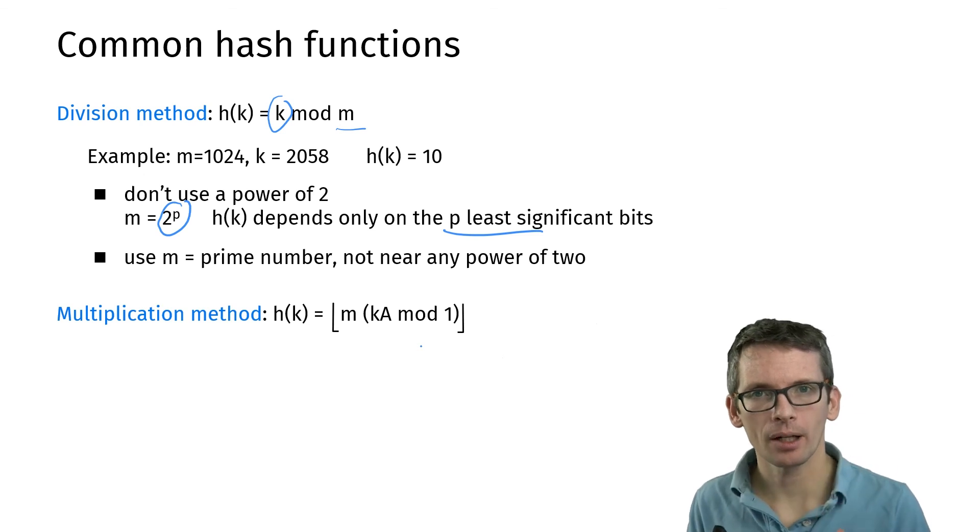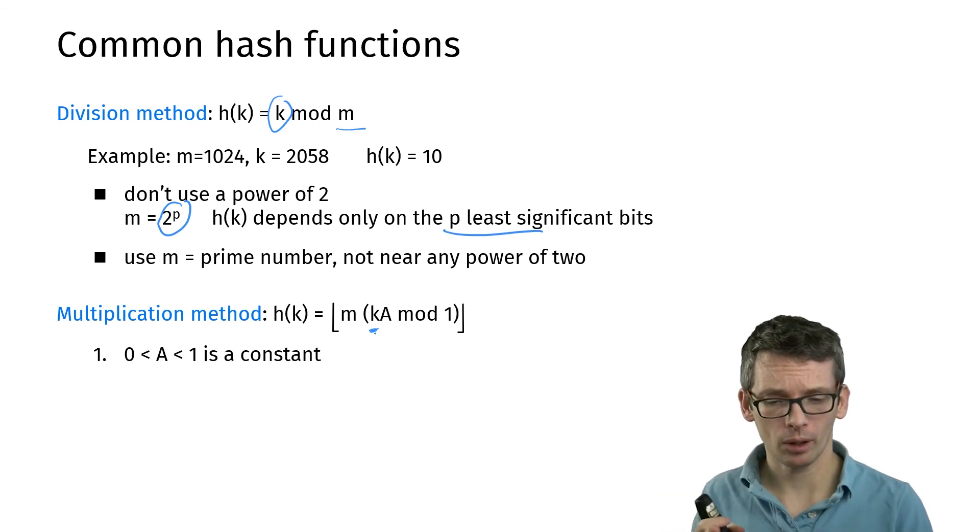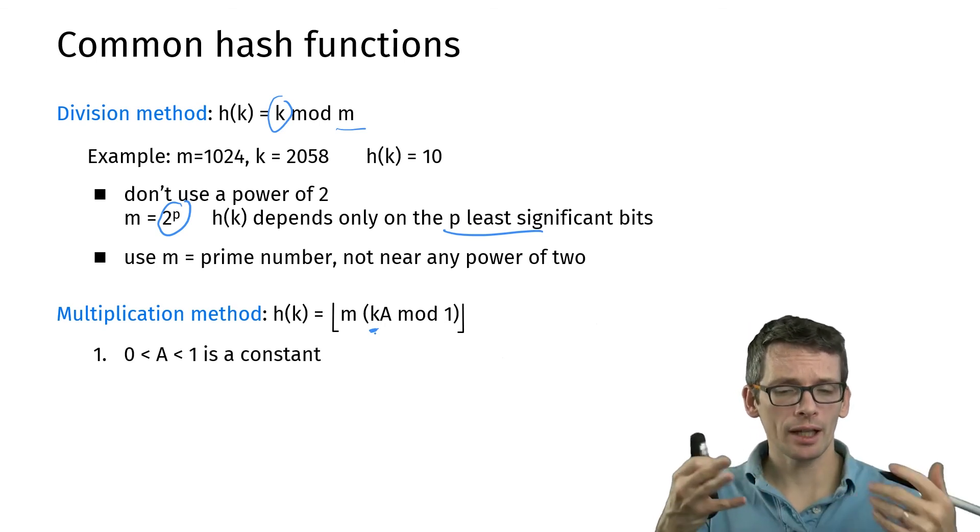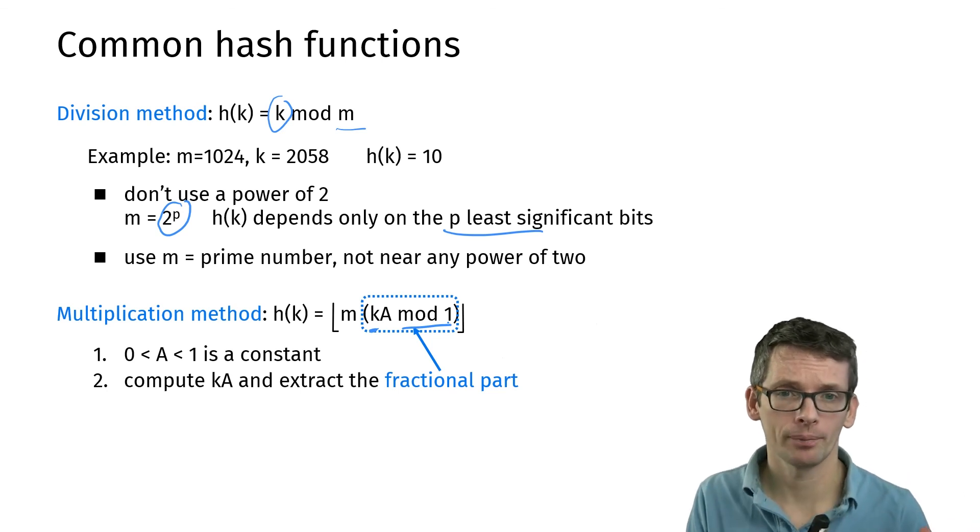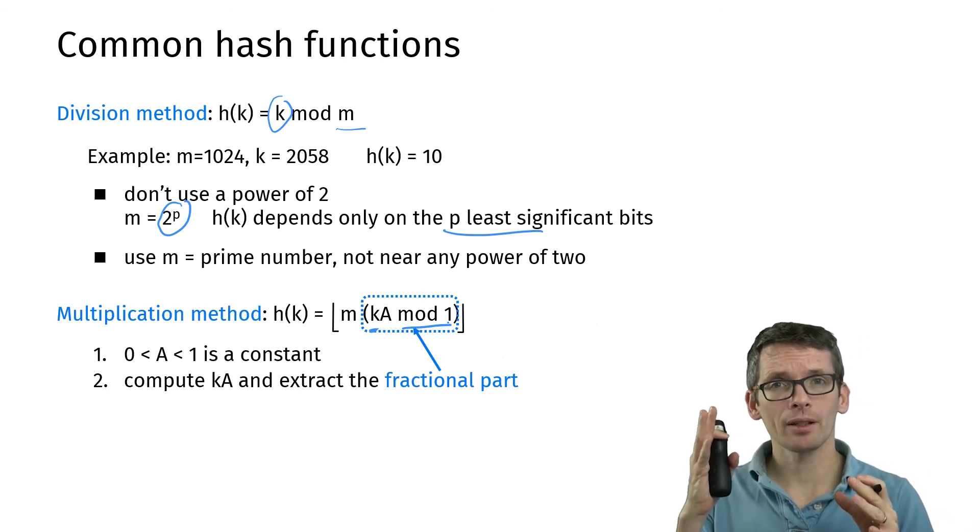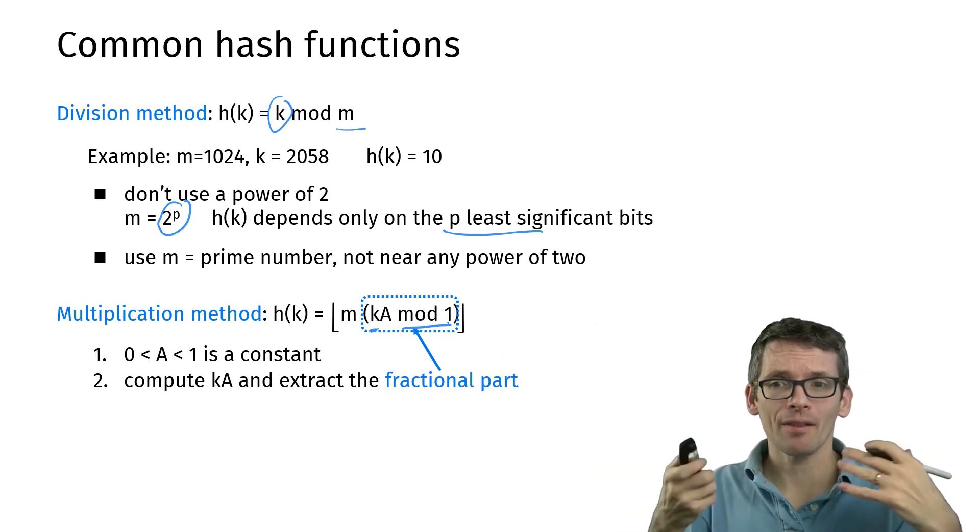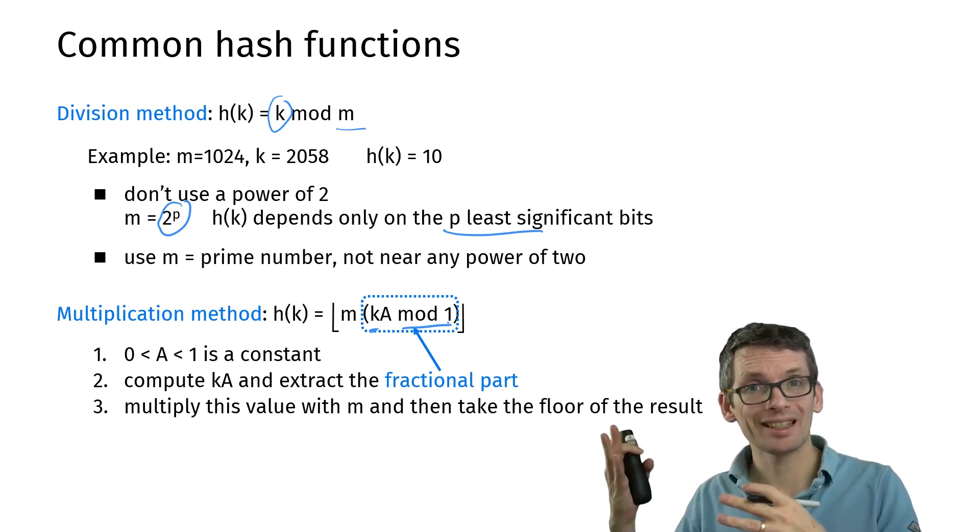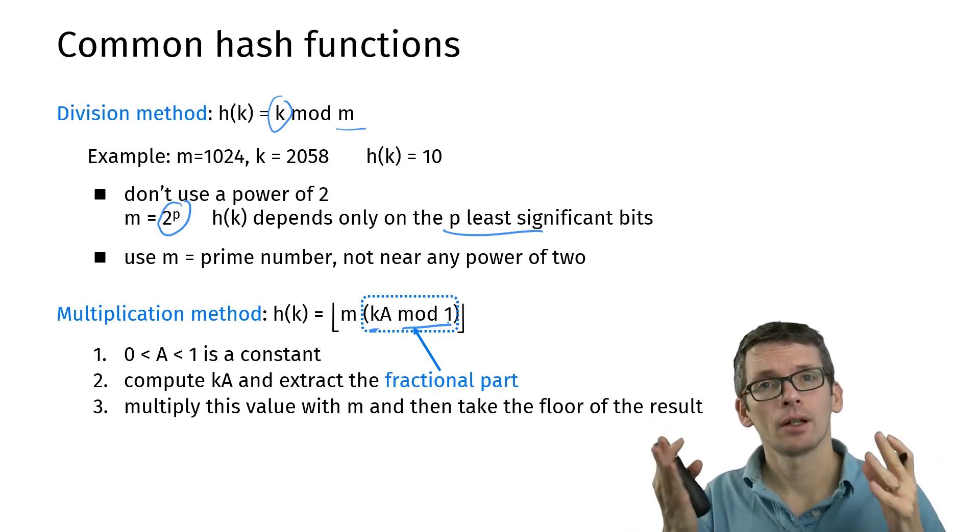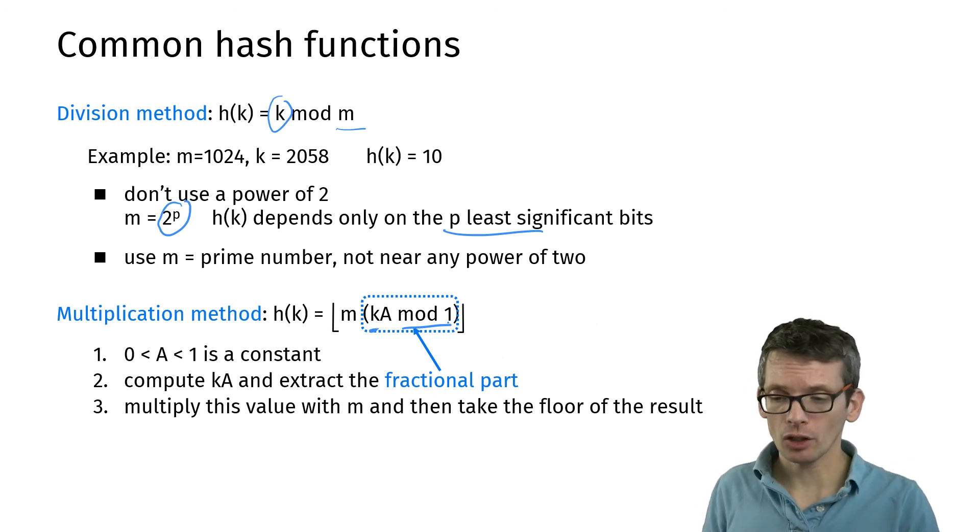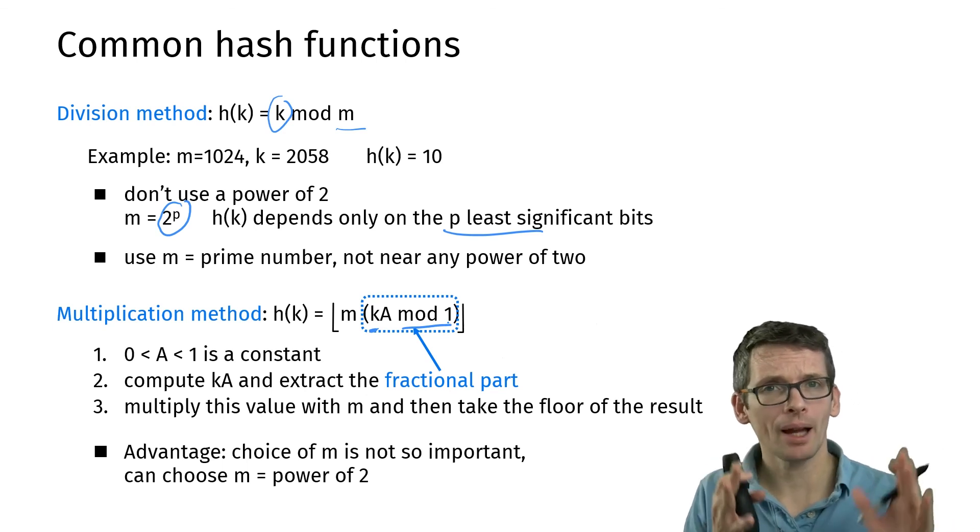Another way to get a hash function is a multiplication method. You take your number k, you multiply it with a number a between 0 and 1. That will give you a decimal number, and what you do here—what I denote by modulo 1—is you take the fractional part, the part behind the decimal point. That is a number between 0 and 1, strictly smaller than 1. Now if you multiply that with m, you get a number between 0 and strictly below m. You round that down to the next integer—that gives you your index. The advantage of the multiplication method over the division method is that you don't have to think about what your m is. It doesn't matter if m is a power of 2.